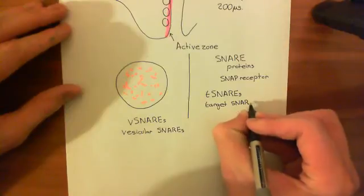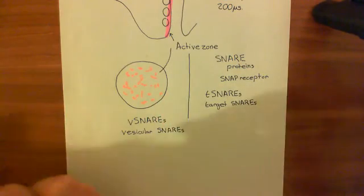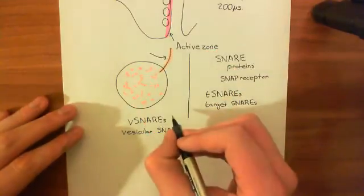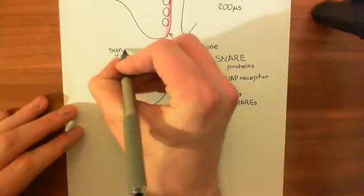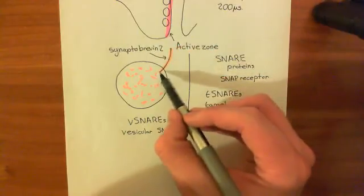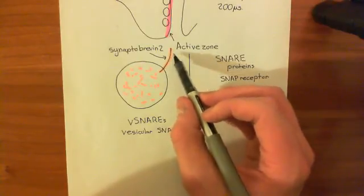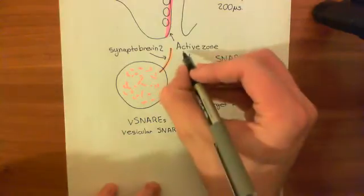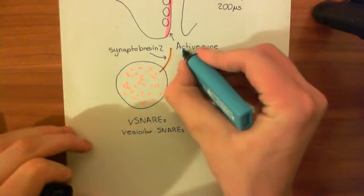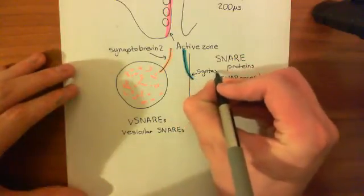Let's look at the SNARE proteins specifically. In the membrane of the vesicle, you have a V-SNARE known as synaptobrevin-2 — this is the SNARE protein in the vesicular membrane. Its structure has a membrane-spanning portion and then an alpha helix. This alpha helix is going to form a core SNARE complex with alpha helices from the T-SNAREs. You also have a T-SNARE in the plasma membrane with a membrane-spanning portion and an alpha helix — this is syntaxin-1.